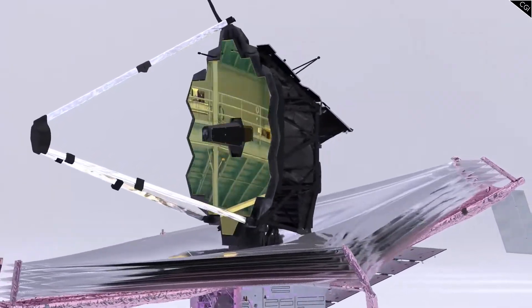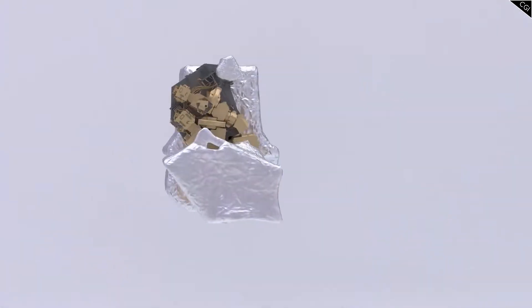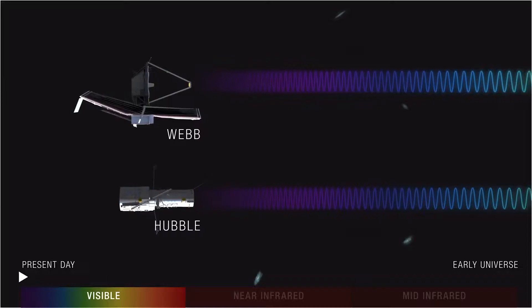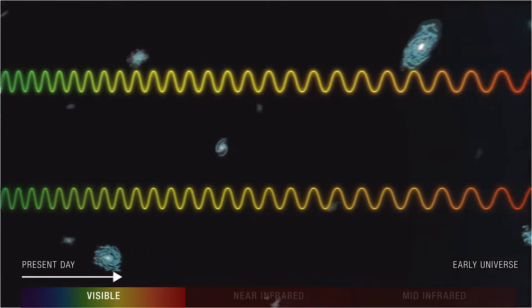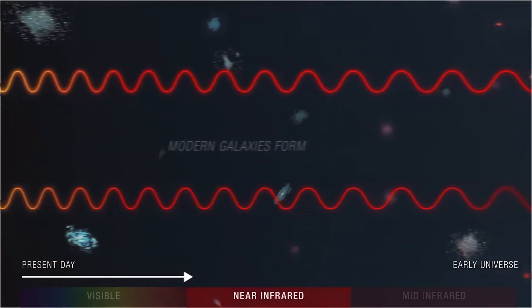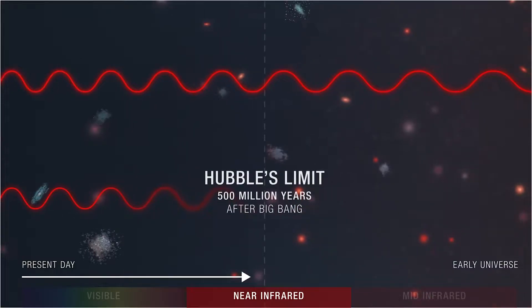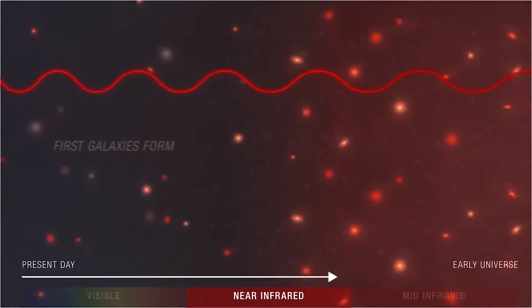It boasts numerous cameras and scientific instruments which allow it to see across the infrared spectrum. This is a feature that is vital to its unique mission. Due to the expansion of the universe, all of the light from the furthest reaches of space have been stretched to the point that no matter what they were to start with, they are all at least infrared light now. So the only way to see these light sources is with an infrared telescope.